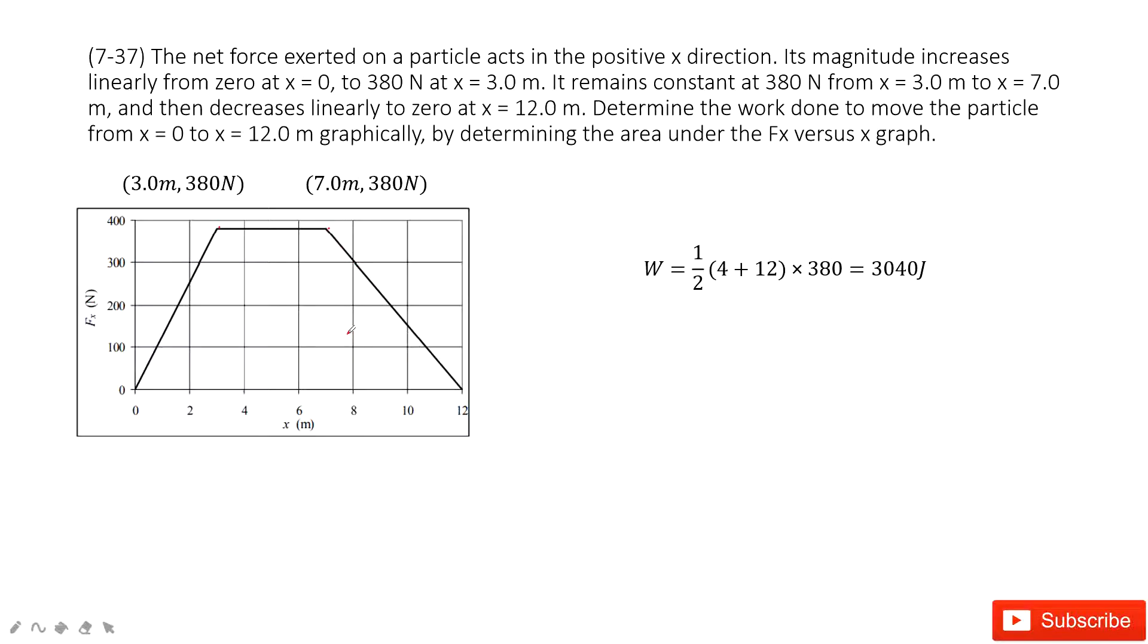The problem asks us to find the work done to move the particle from X equals 0 to X equals 12. So how can we do that? They give you a hint, right? They tell you this work just by determining the area under the F versus X graph.